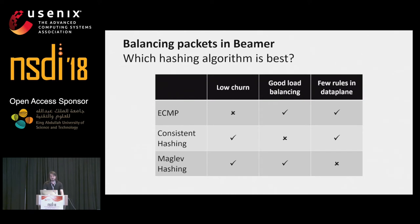Consistent hashing still requires few rules. Finally, we have Maglev hashing, introduced by Google in the Maglev paper. It has low churn and offers good load balancing, but it requires significantly more rules in the data plane.